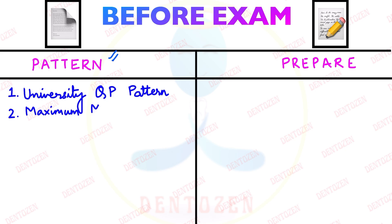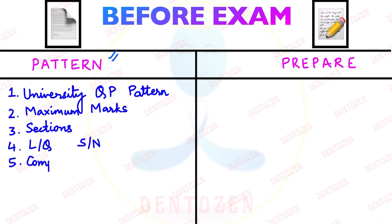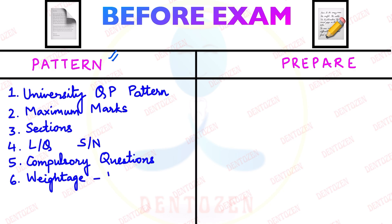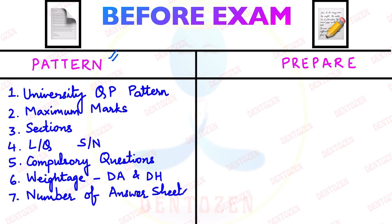You must know whether the questions are divided into sections or not, because in some universities section A and section B are given, in some it's not. Then you must know how many long questions and how many short notes there are so that you can plan your time. You must know whether all questions are compulsory or whether a choice will be given. Also know the weightage for dental anatomy and dental histology, the number of answer sheets given, and whether use of color pens or pencils is allowed.